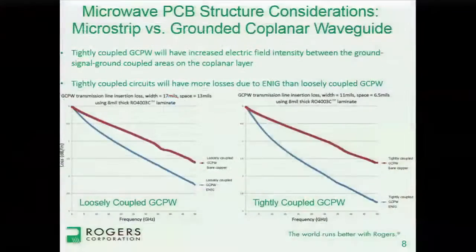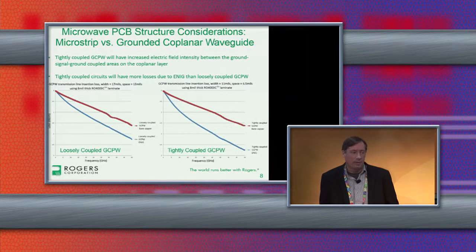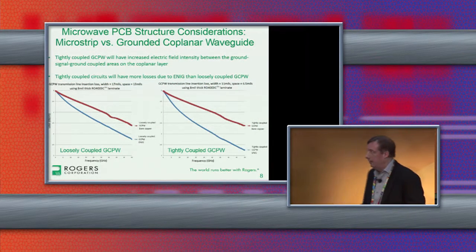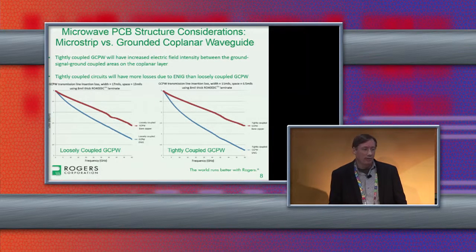Following the same thought process, looking at loosely coupled versus tightly coupled grounded coplanar waveguide: loosely coupled means less fields between the signal and the neighboring ground planes, and less current density at the sidewalls. So for the loosely coupled circuit, there is a difference between bare copper and ENIG, but it's not as dramatic as for tightly coupled circuits — thinking about the fields and how these structures interact, that makes sense.